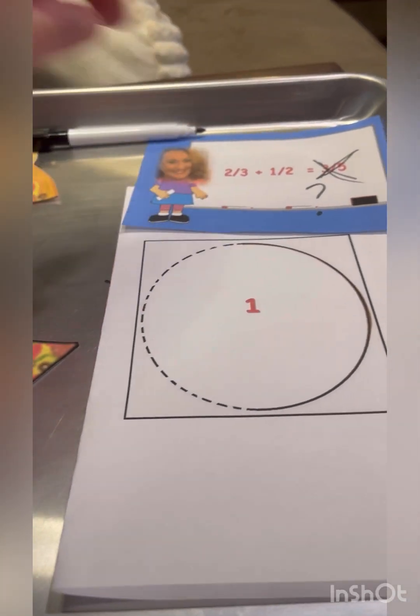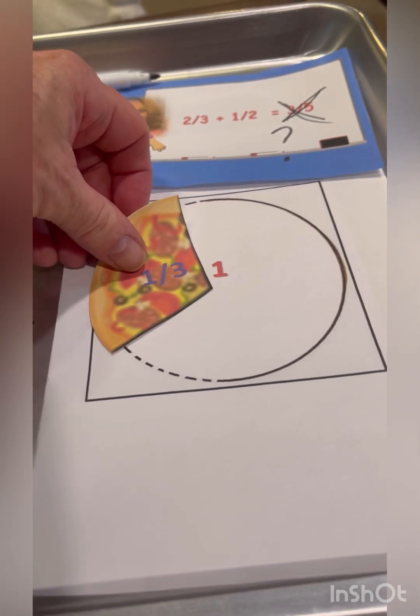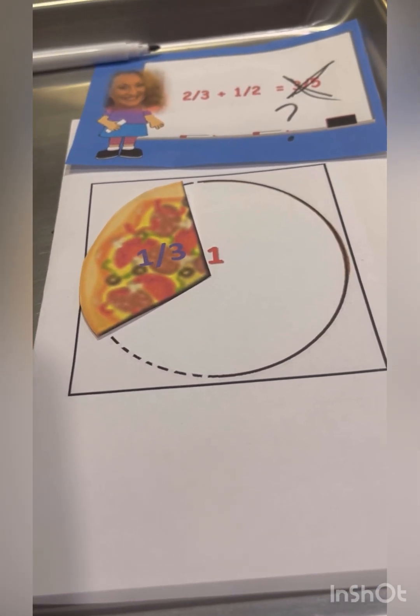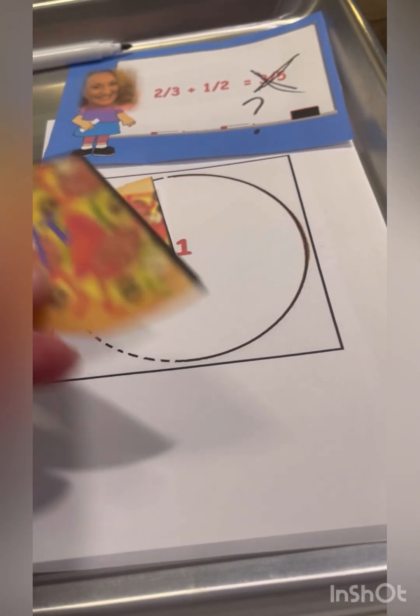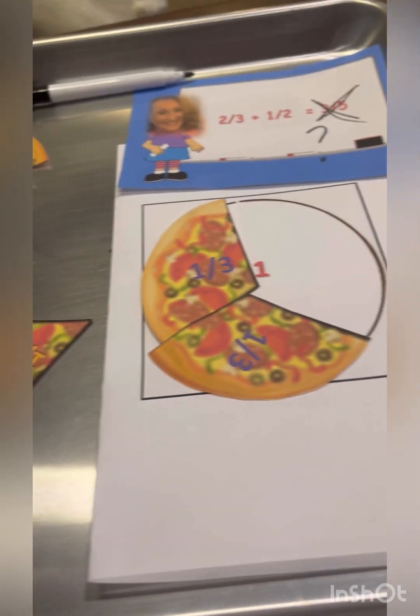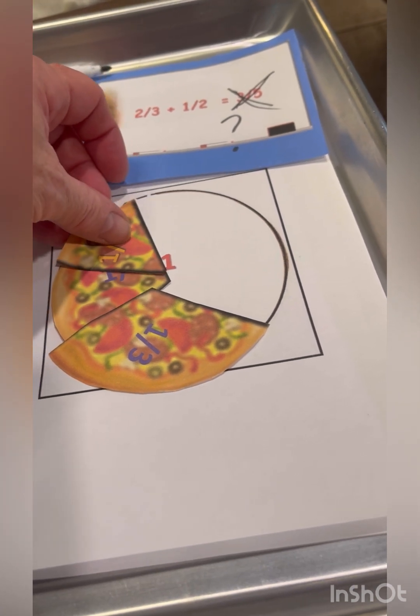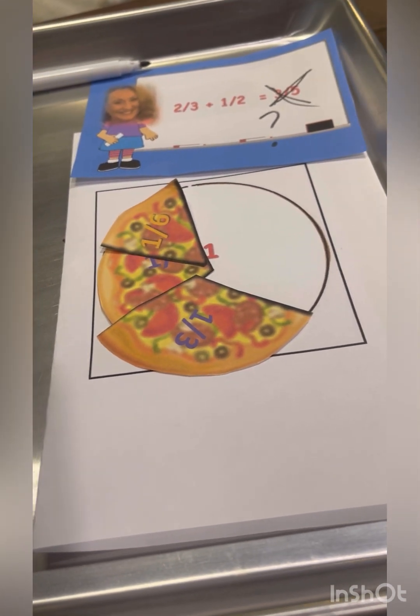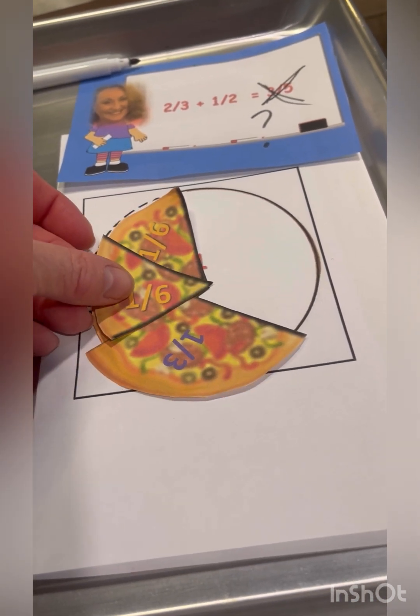So, we've got two-thirds. So, let's get my two-thirds here on my pizza plate. Another two-thirds. And then we are going to put one-sixth on top of it, just like we did with our number lines.